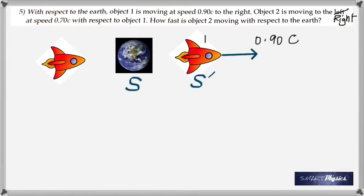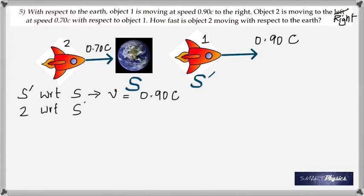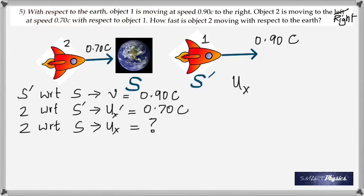And so the velocity 0.90c is going to be v, S prime with respect to S, that's called v and that's 0.90c. And the velocity is positive, 2 with respect to S prime that's called ux prime which in this case is positive 0.70c. So you have to consider the direction. And 2 with respect to S is ux which you are looking to find. This question is not so tough, it's easy once you really understand this concept.